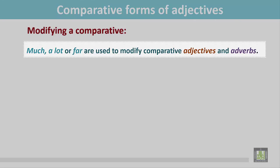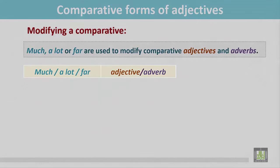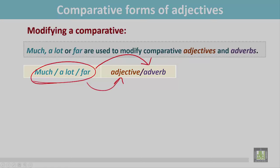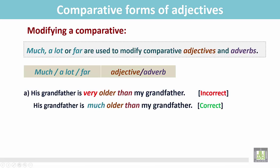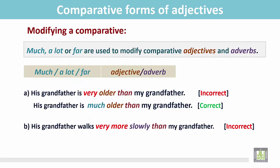Much, a lot, or far are used to modify comparative adjectives and adverbs. These are placed before the comparative adjective or adverb. The incorrect sentence 'His grandfather is very older than my grandfather' should be corrected to: 'His grandfather is much older than my grandfather.' We can use much, a lot, or far before the comparative adjective.